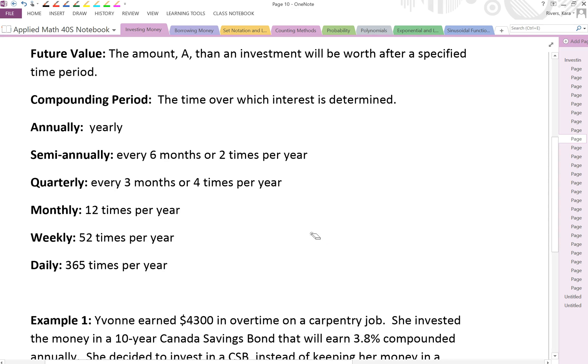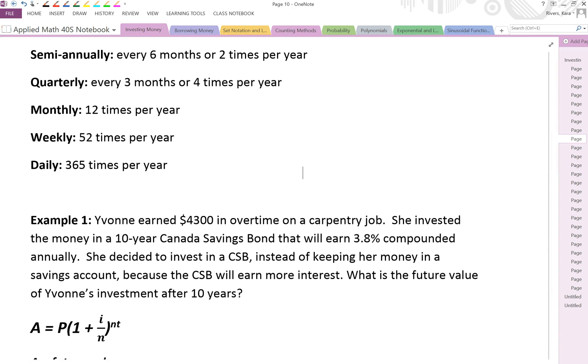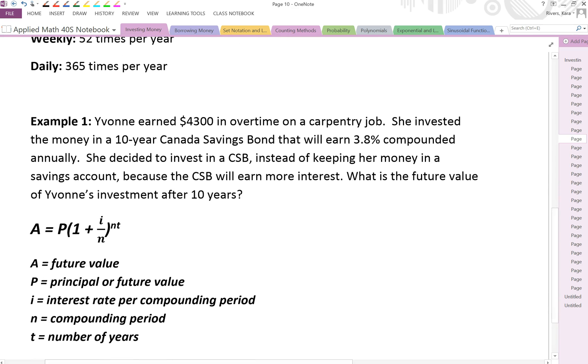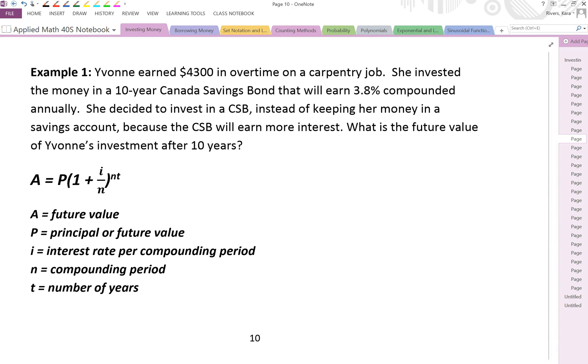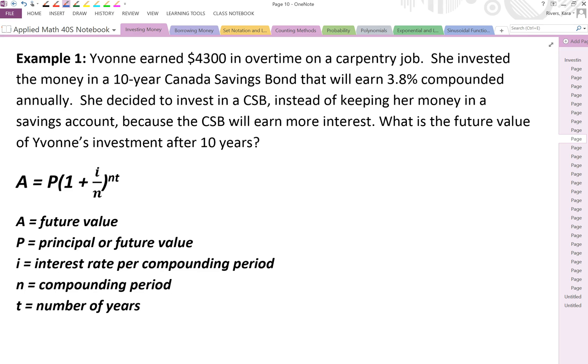So let's take a look at example one. Yvonne earned $4,300 in overtime on a carpentry job. She invested the money in a 10-year Canada Savings Bond that will earn 3.8% compounded annually. She decided to invest in a CSB instead of keeping her money in a savings account because the CSB will earn more interest. What is the future value of Yvonne's investment after 10 years?